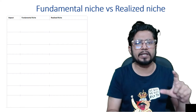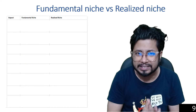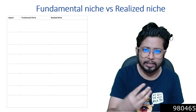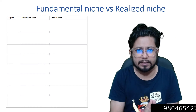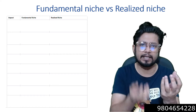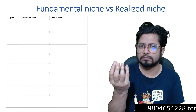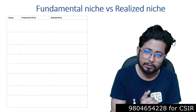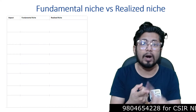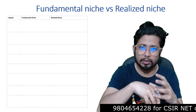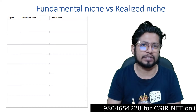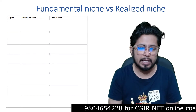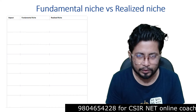In order to understand the difference between fundamental niche and realized niche, you should know what niche is. There are multiple definitions — niche is a functional role an organism plays in an ecosystem. In simple terms, niche is habitat plus the behavior of that organism. A niche is composed of: the habitat where the organism lives, what that organism eats, what eats that organism, and the behavior of that organism — these four components produce niche for any organism.